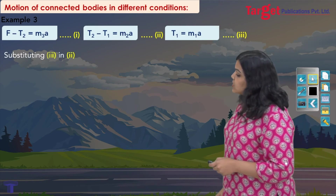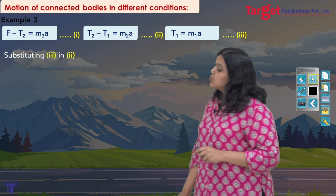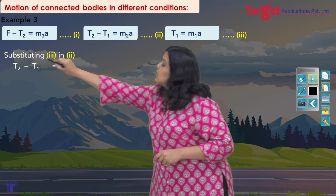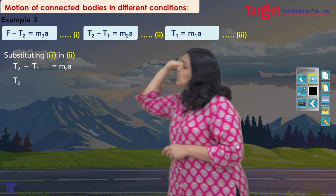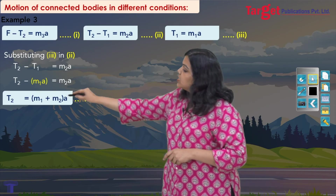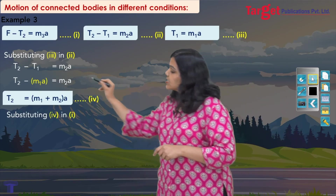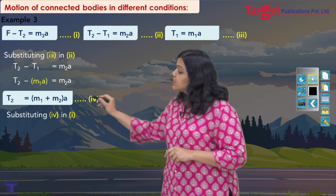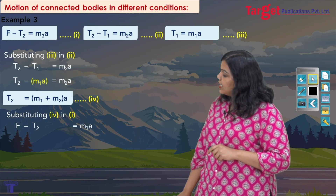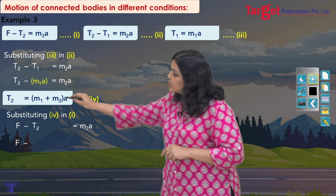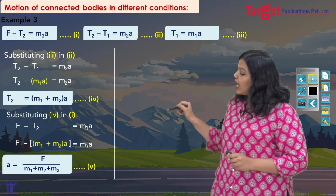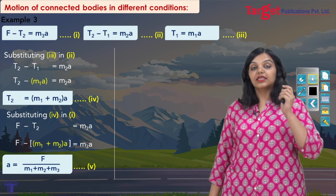Substituting equation 3 into equation 2: T2 minus T1 equals m2a, replacing T1 with m1a gives T2 equals (m1 plus m2) times a. Using this expression for T2, I substitute it into equation 1: F minus T2 equals m3a, replacing T2 with (m1 plus m2)a. Rearranging gives an expression for acceleration: a equals F divided by (m1 plus m2 plus m3).